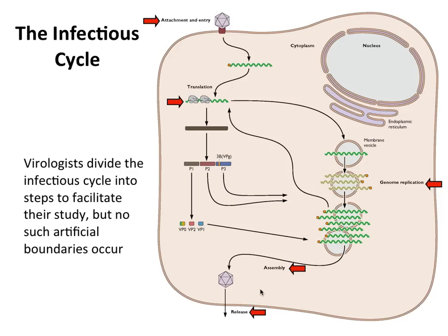The infectious cycle is a summary phrase that means everything that happens in an infected cell, starting from the beginning when the virus has entered the cell all the way through the whole process of making new virions and release of those virions from the cell.